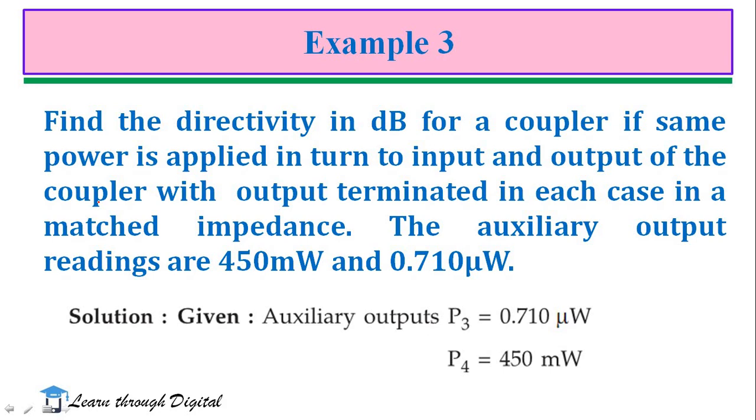First, we write, auxiliary output is P3, 0.710mW, P4 is 450mW.